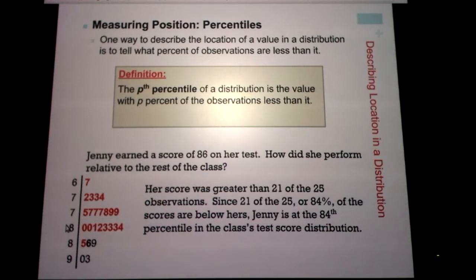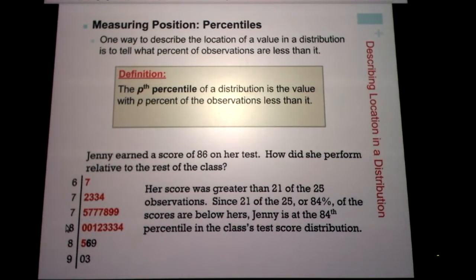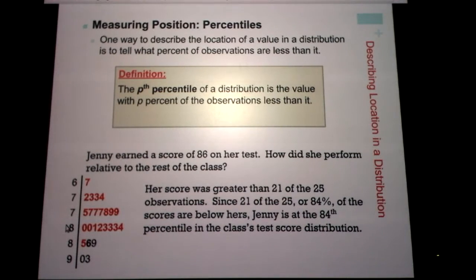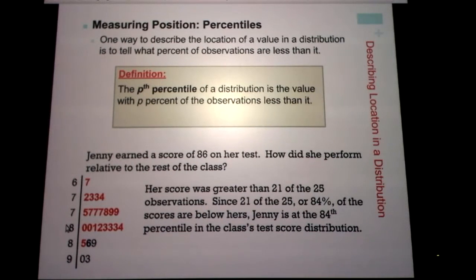We count 21 scores below hers, and we know there are 25 students. To change this to a percent, we divide 21 by 25 on the calculator: 21 divided by 25 is 0.84, and 0.84 as a percent is 84%. That's the basics of finding a percentile. Now, why can't somebody be at the 100th percentile?